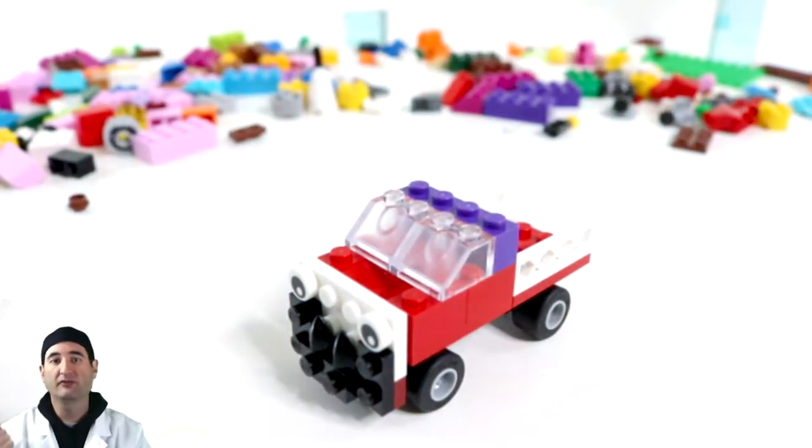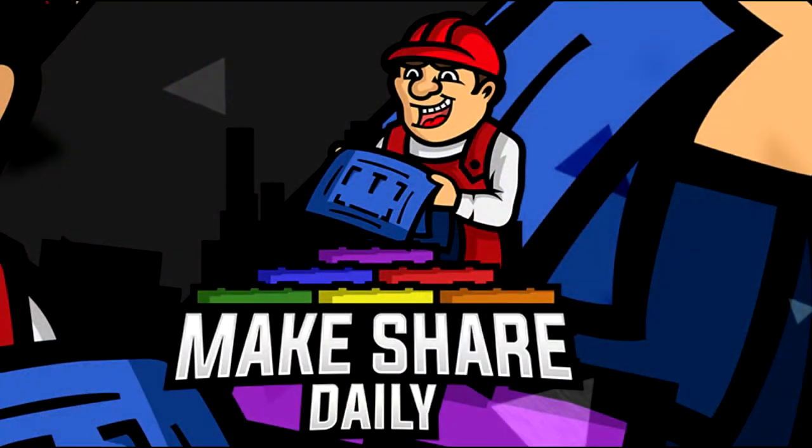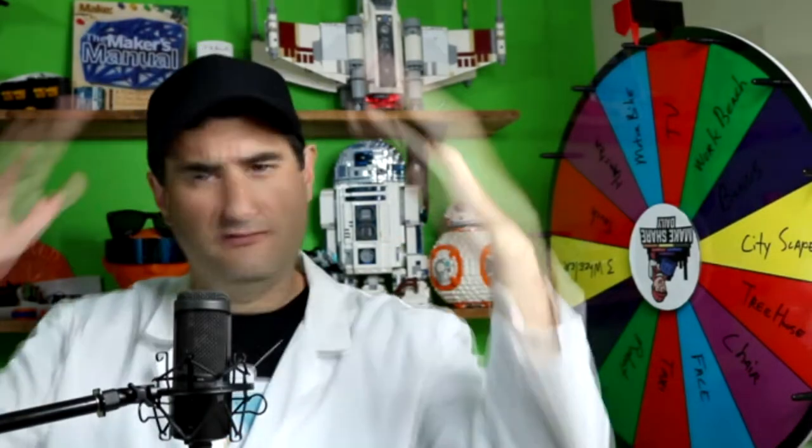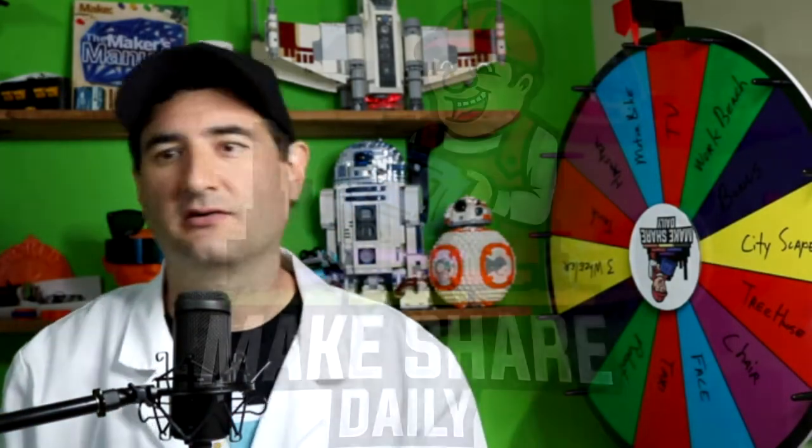And let's go spin the wheel for tomorrow's build. And let's see what we're going to build tomorrow. So, let's spin the maker wheel and find out what we're going to build today. A TV. A classic TV. A modern flat screen TV. Maybe it's going to be a TV screen. Like something on the television. I'm not sure. Let's jump right in.